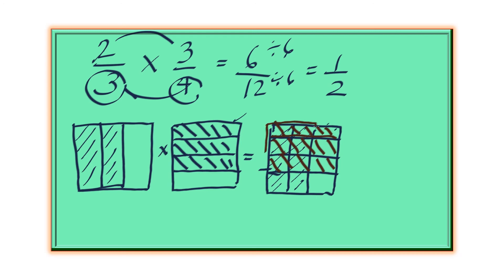Now let's count the overlap: 1, 2, 3, 4, 5, 6. Out of 1, 2, 3, 4, 5, 6, 7, 8, 9, 10, 11, 12. So that's 6 out of 12. Again, that reduces to 1 half.